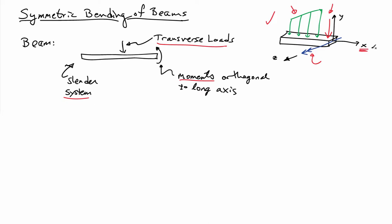By slender, I mean that the dimension in the x-direction is much larger than the dimensions in the y and z-directions. Symmetric, in this case, means that the cross-section of the beam is symmetric with respect to a vertical axis — the y-axis in this case.